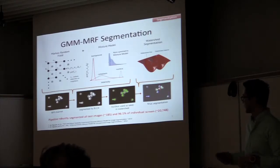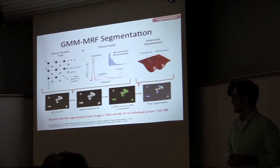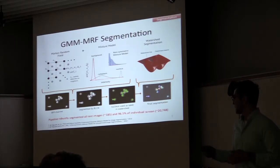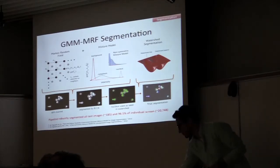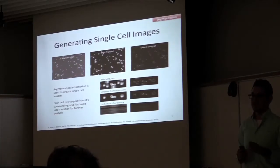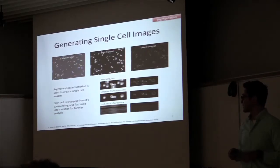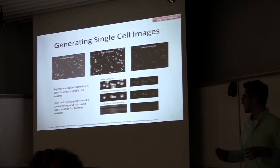Because most cells usually appear in clusters, not as individuals, using this pipeline I've been able to properly segment all 185 test images and also segment images from one of the screens with a 96.5% average accuracy. Once we have the segmented cells, we crop them out into individual cell images using a bounding box — I've chosen 64 by 64 as the size — eliminate surrounding cells, and then flatten those images into cell vectors for further analysis.